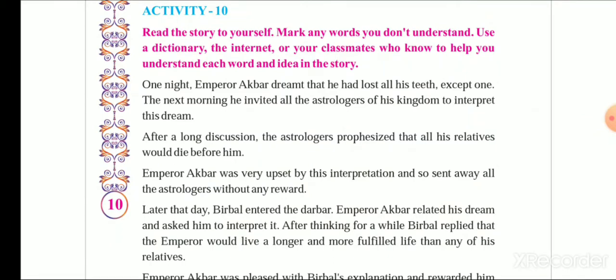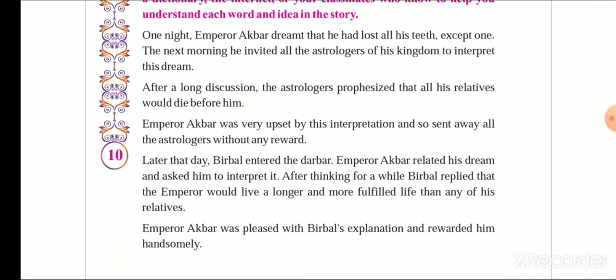One night, Emperor Akbar dreamt that he had lost all his teeth except one. The next morning, he invited all the astrologers of his kingdom to interpret his dream. After a long discussion, the astrologers prophesied that all his relatives would die before him.